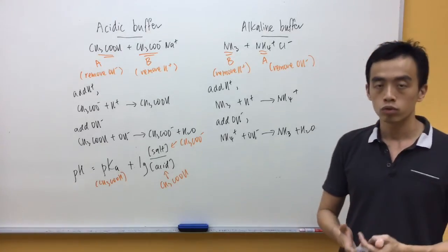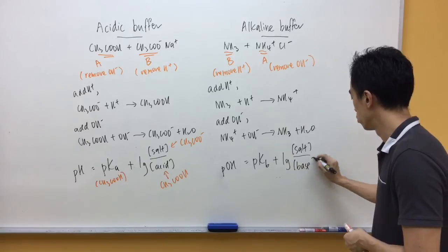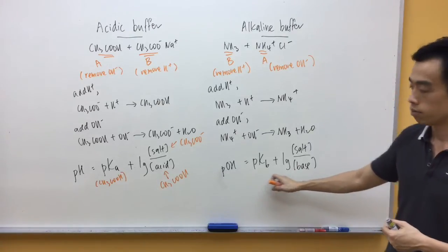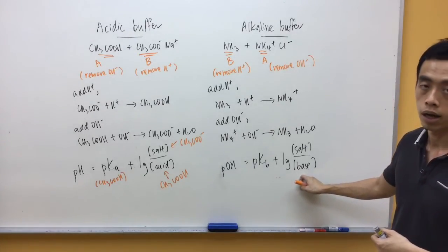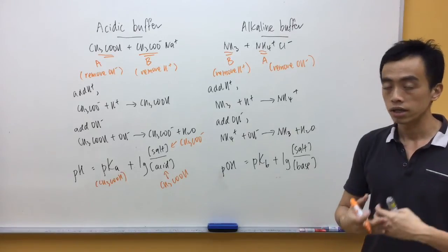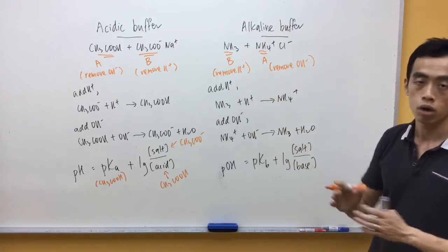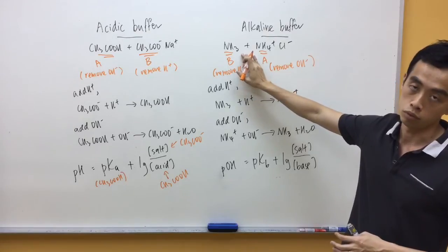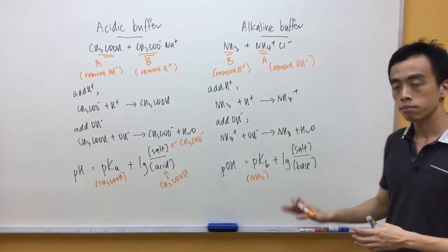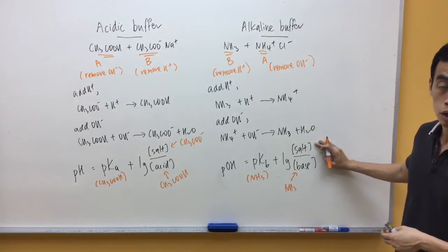For an alkaline buffer, there's also a buffer equation that we can use. Now the buffer equation for an alkaline buffer is given as pOH, which equals my pKB plus log concentration of salt over concentration of the base. So pKB again for base dissociation constant. Very clearly it represents the dissociation constant of the base. So in this case, again, between NH3 and NH4+, it's not ambiguous. It must represent the Kb value for ammonia because ammonia is the base. So therefore salt will be my conjugate acid, NH4+.